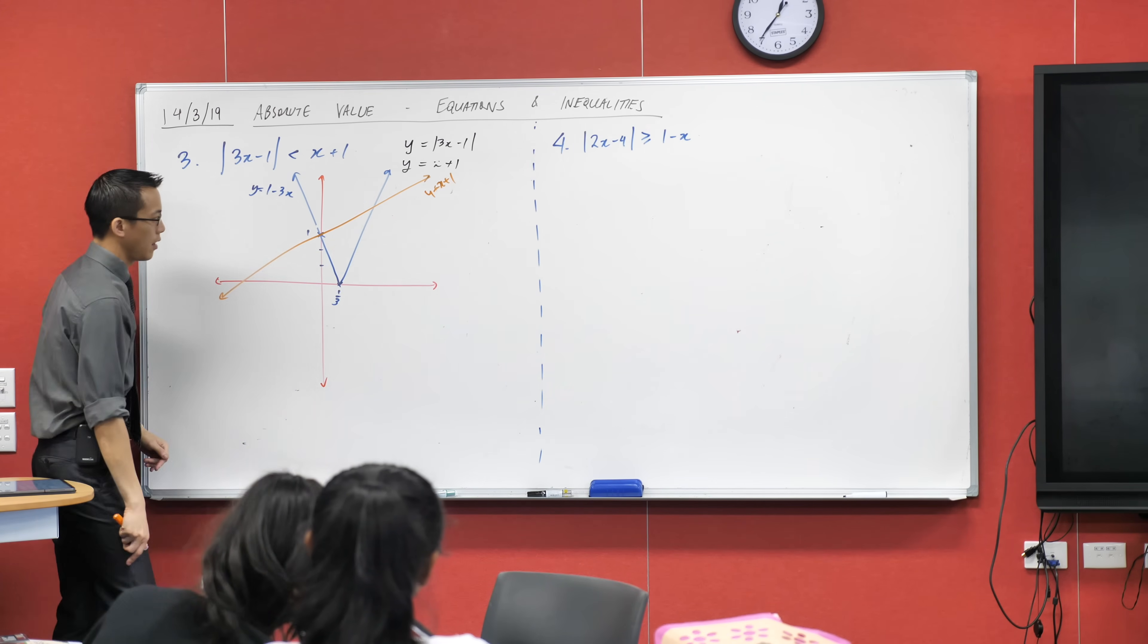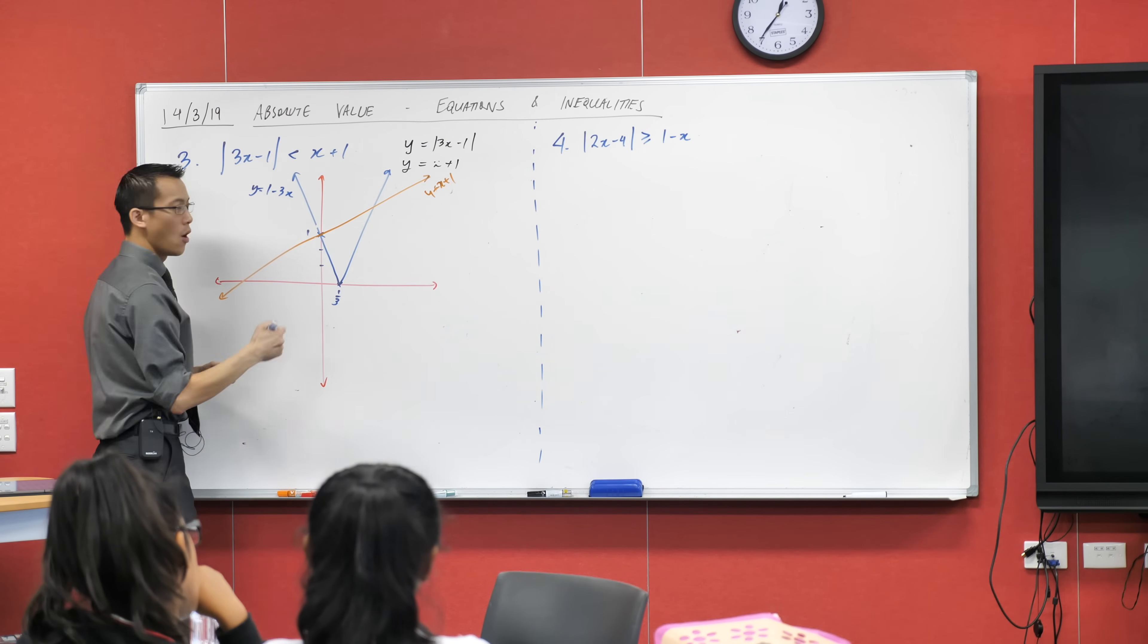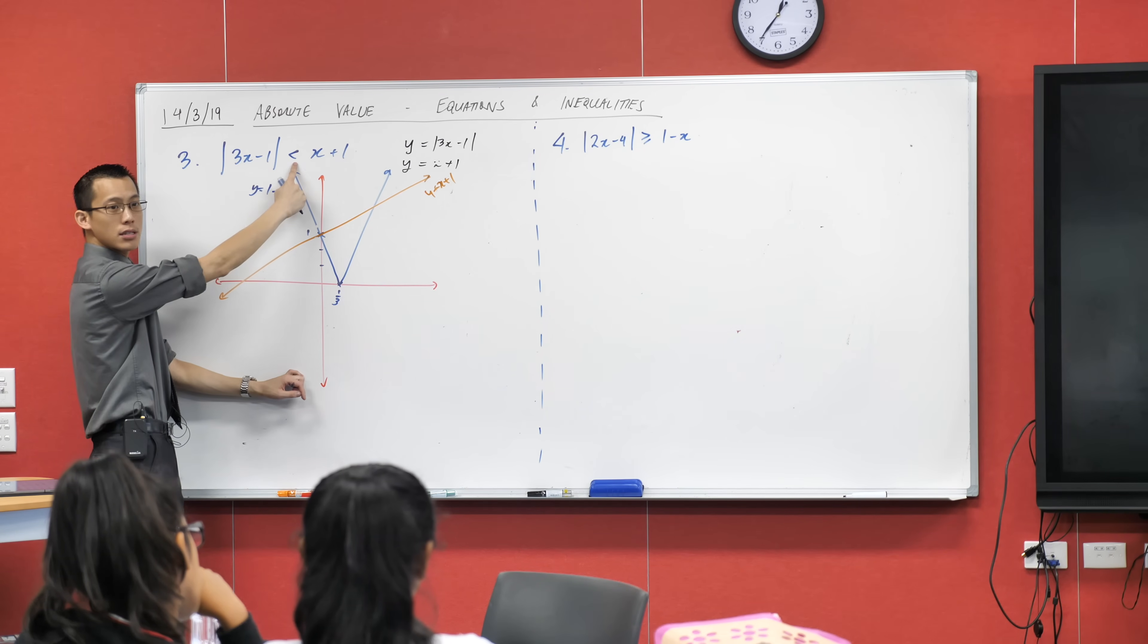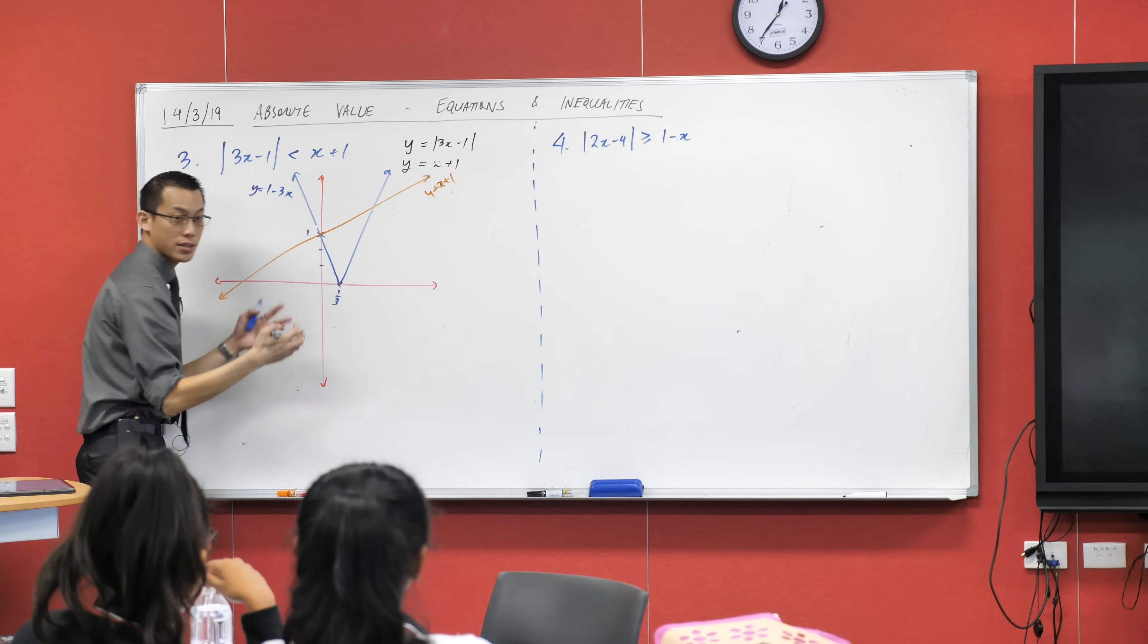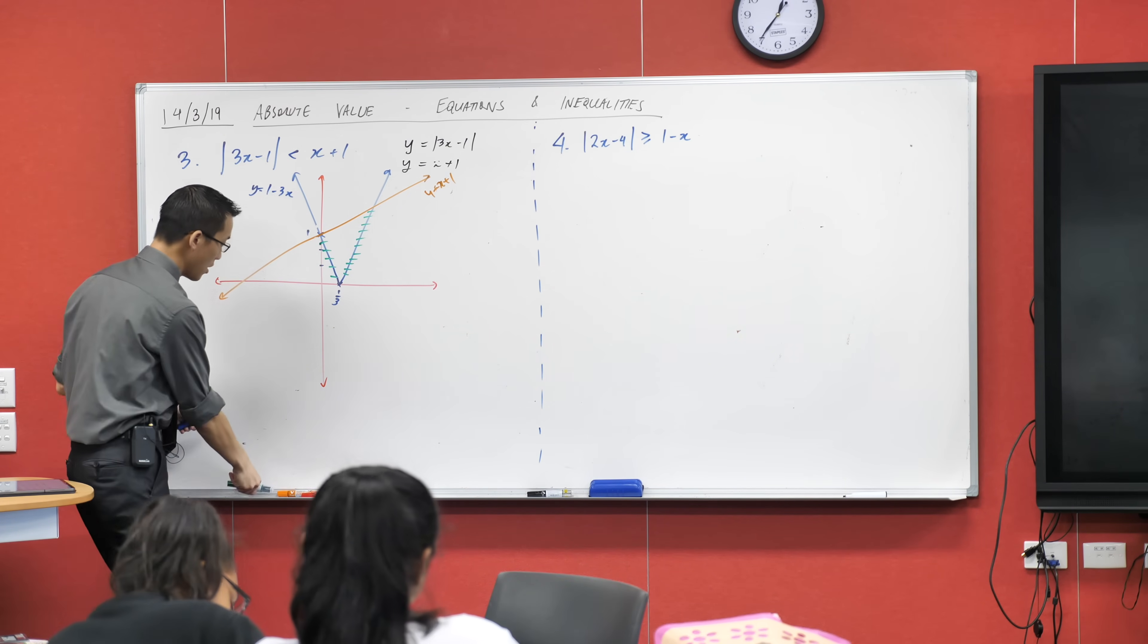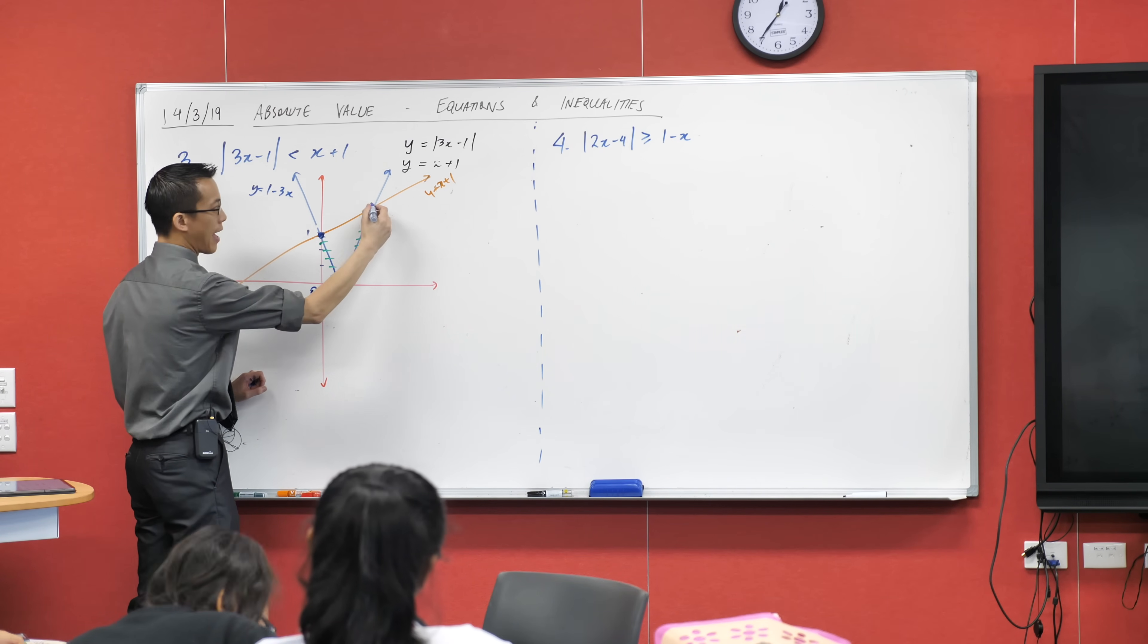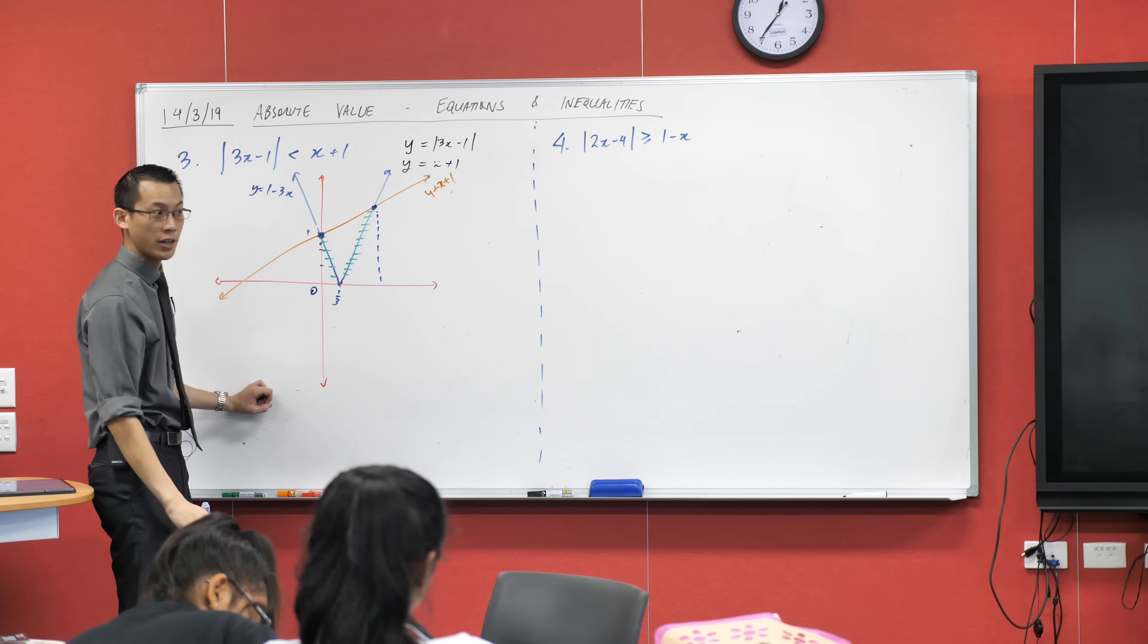Now because I know this intercept is here, what I'm asking here is when is this absolute value, the V graph, when is it lesser than, which means below, when is it below the orange graph? And I'm going to mark in, just like I have for my other questions, I'm gonna mark in the spots where that happens. So you can see I want to be between this x value which is zero and this x value which I don't currently know but you might have already calculated. Who's got it? One.